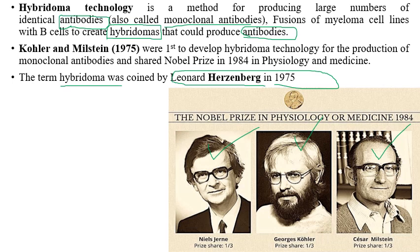Hybridoma technology is a method of producing a large number of identical antibodies by the fusion of myeloma cells with B-lymphocytes or B-cells. The resulting cells are called hybridomas, and the technology for producing them and their specific antibodies is called hybridoma technology or monoclonal antibody production.